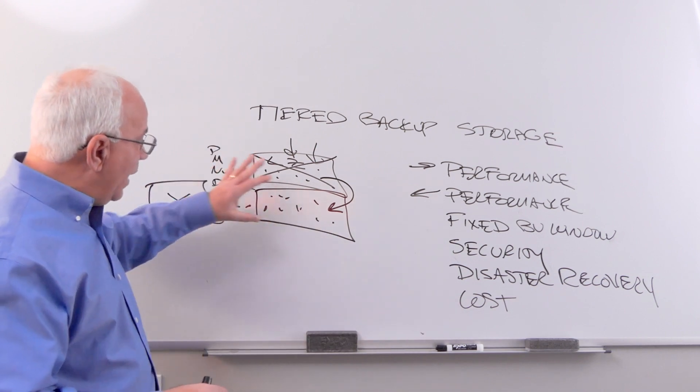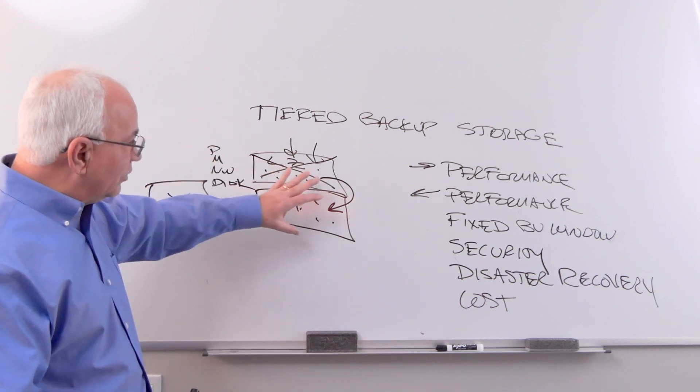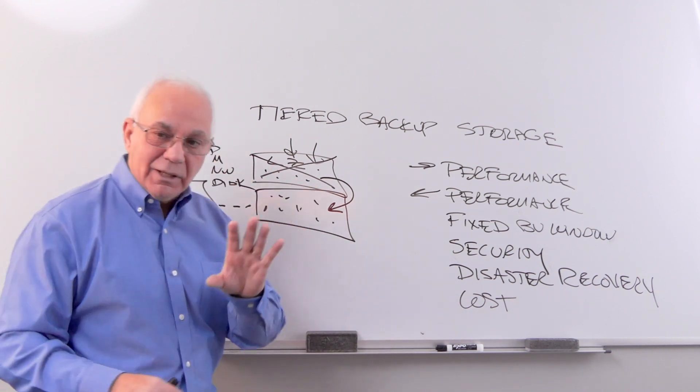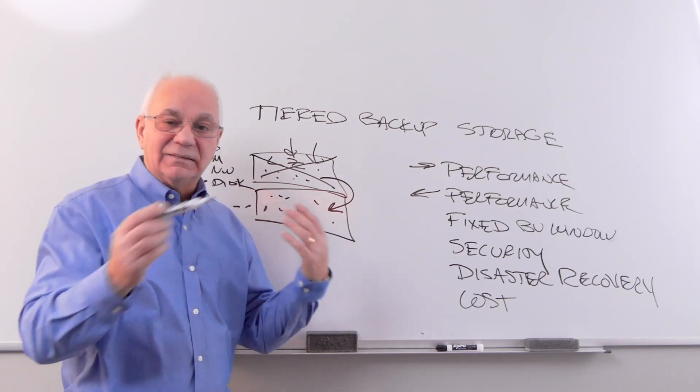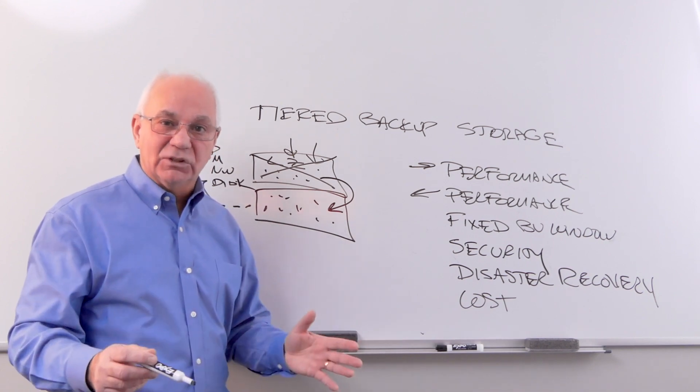Lastly, we have the lowest cost up front and over time with tiered backup storage because you eliminate forklift upgrades with scale-out, and because you can mix and match any size or age of appliance in a single system, it eliminates planned product obsolescence.